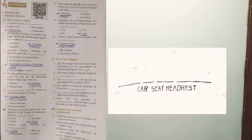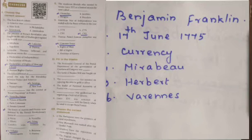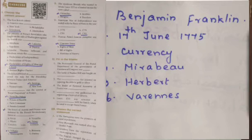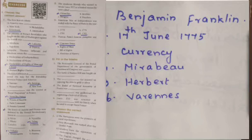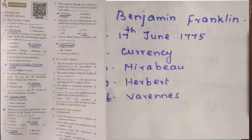Roman number 2: Fill in the blanks. Question 1: The Postmaster General of the Continental Congress was Benjamin Franklin. Question 2: The Battle of Bunker Hill was fought on 17th June 1775. Question 3: The Currency Act insisted on repaying the debt in gold or silver. Question 4: The leader of the National Assembly of France was Mirabeau. Question 5: Herbert was guillotined for organizing the Festival of Liberty. Louis XVI was arrested at Varennes when he tried to escape from France.